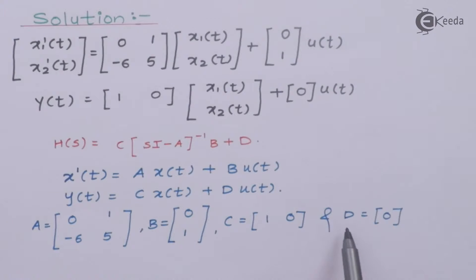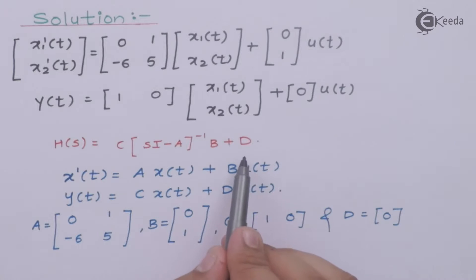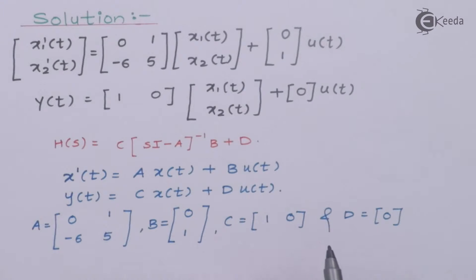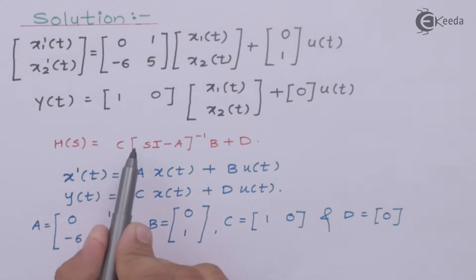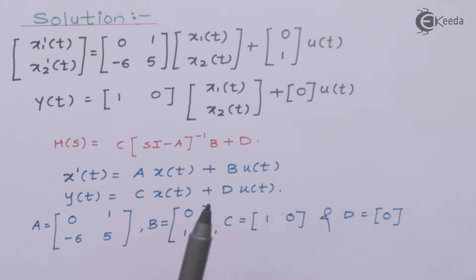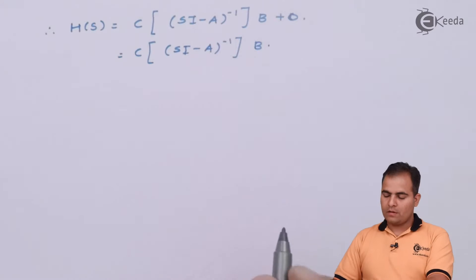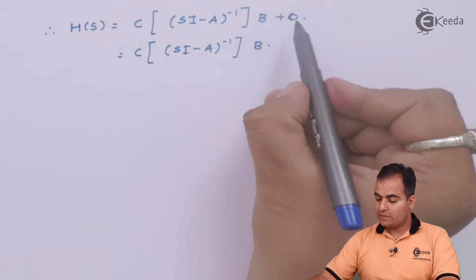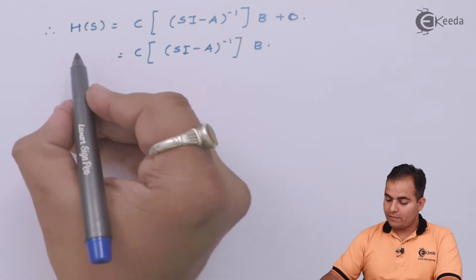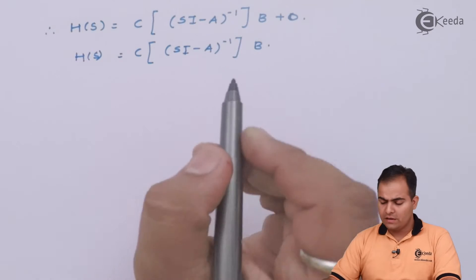Since my D value is 0, if I substitute this into the transfer function equation, the equation simplifies to H(s) = C · (sI - A)⁻¹ · B only, because the D term vanishes.